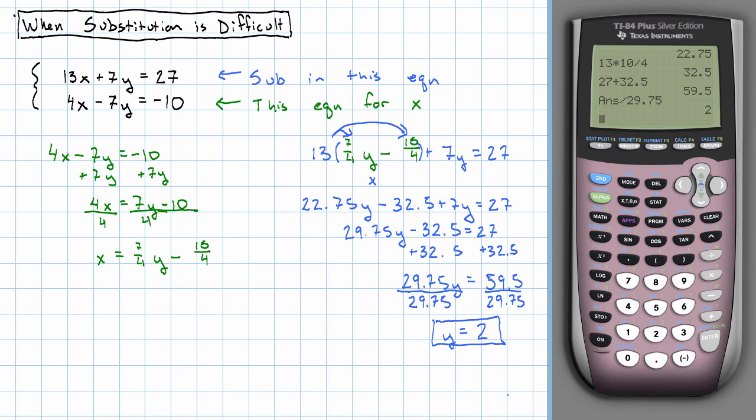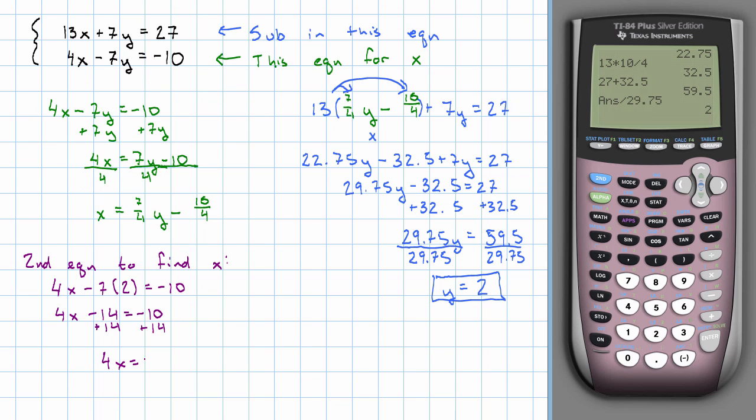That's actually way better than expected. Going back to find x, I guess I'm going to use the second equation. 4x minus 7 times 2 is negative 10. 4x minus 14 is negative 10. Add 14 on both sides. 4x is 4. Divide by 4 and we get x is 1.